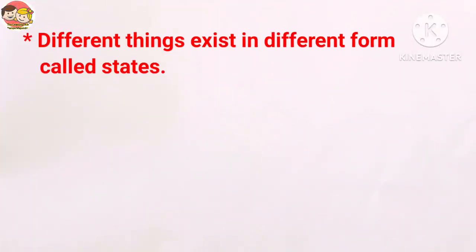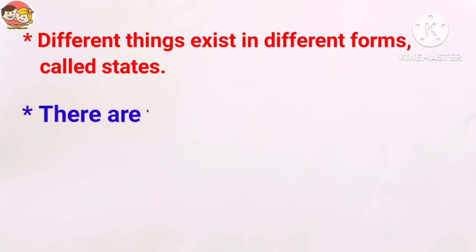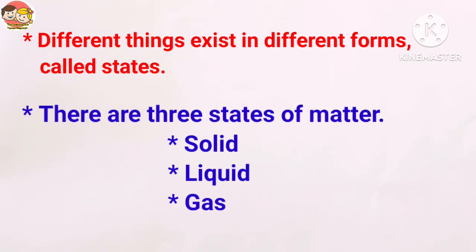Different things exist in different forms called states. There are three states of matter. They are solid, liquid and gas.